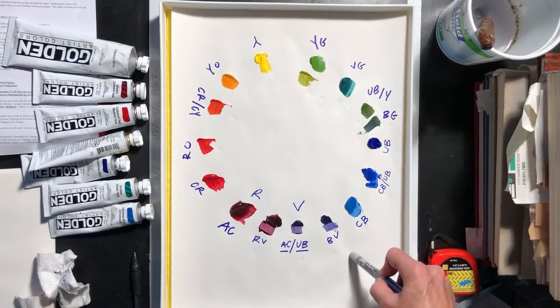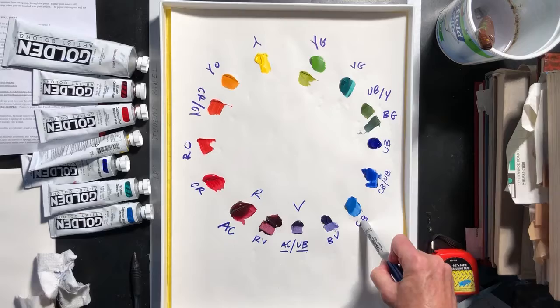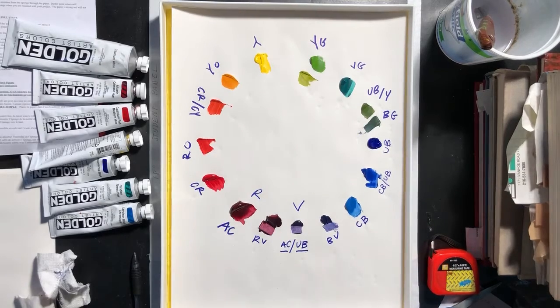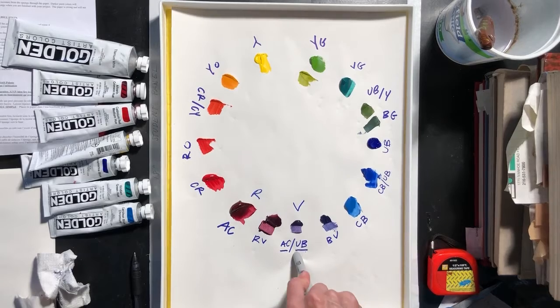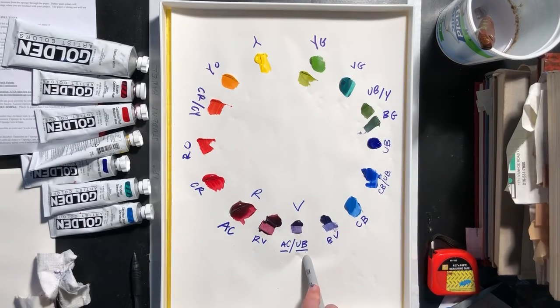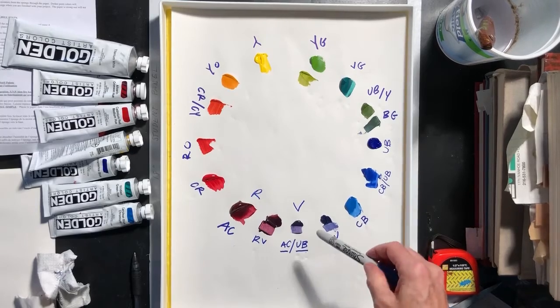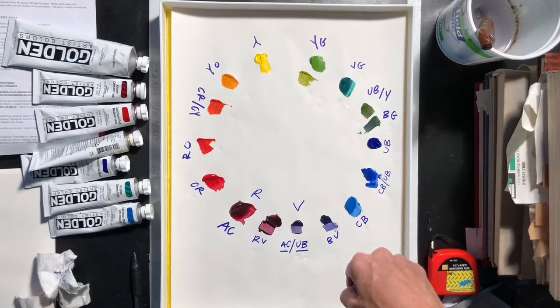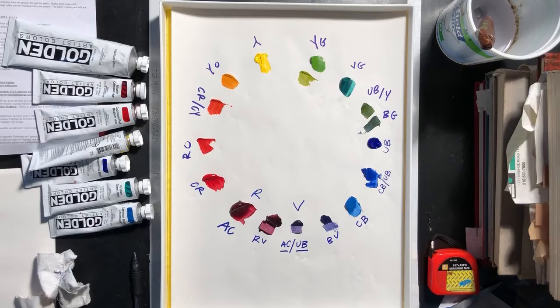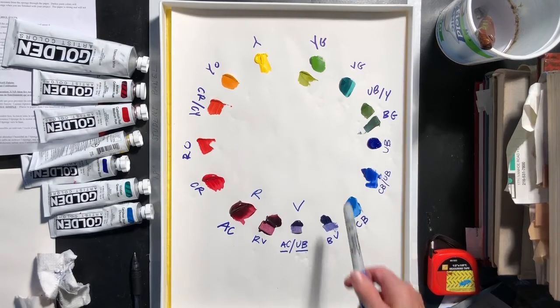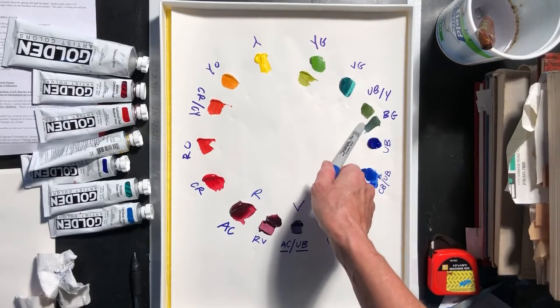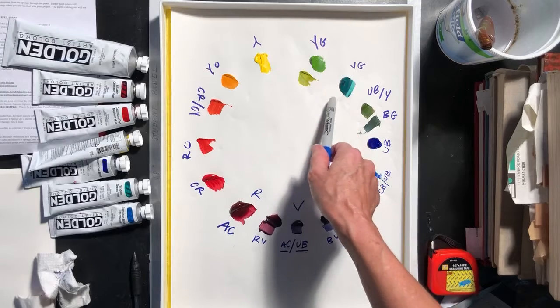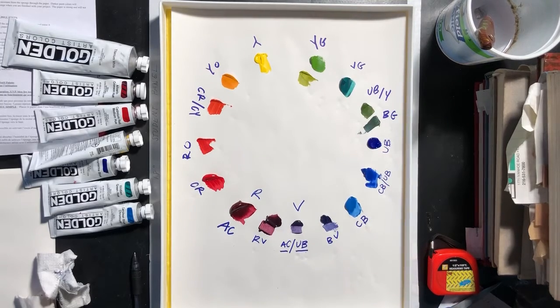The same thing could be true if you mixed cerulean blue and cadmium red to make a violet. You're going to get a very different violet than if you mix alizarin crimson and ultramarine blue. And when we start to break down colors into pairings of other types, you'll get to those varieties. But for now, I just wanted to show you these differences between the viridian green because I think that's the most dramatic.